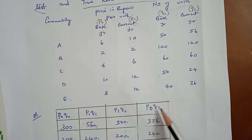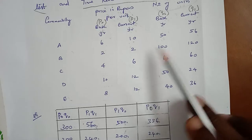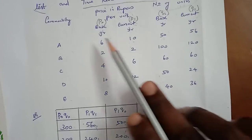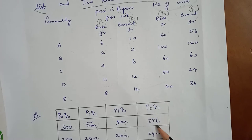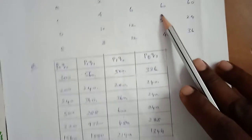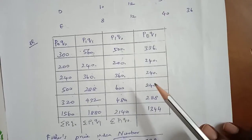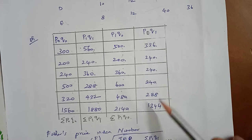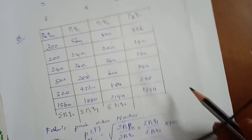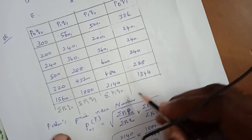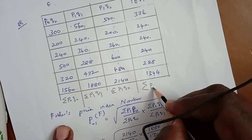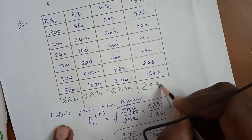The last result is P0 into Q1. So P0 × Q1: 6 × 56 = 336, and 2 × 120 = 240. Adding all the entries, the total value sigma P0Q1 = 1344.